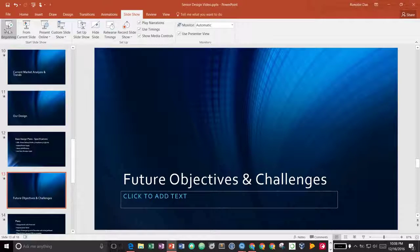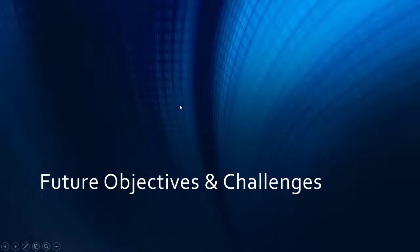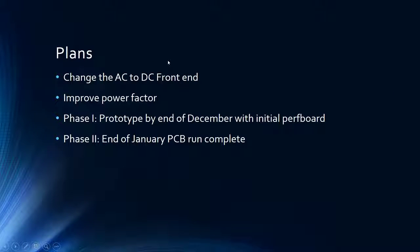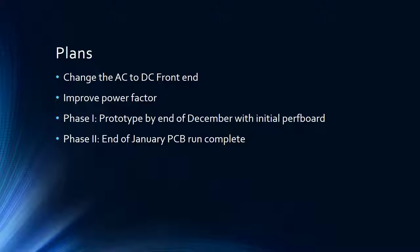Looking at future objectives and challenges: we need to revise parts of the AC-to-DC front end and improve the power factor correction, as we are having issues with the current controller. Our plan is to complete a perfboard prototype by end of December, and finish a PCB run by end of January. We have initial PCB schematics, but high-power perfboard issues have delayed the prototype beyond our original November target.